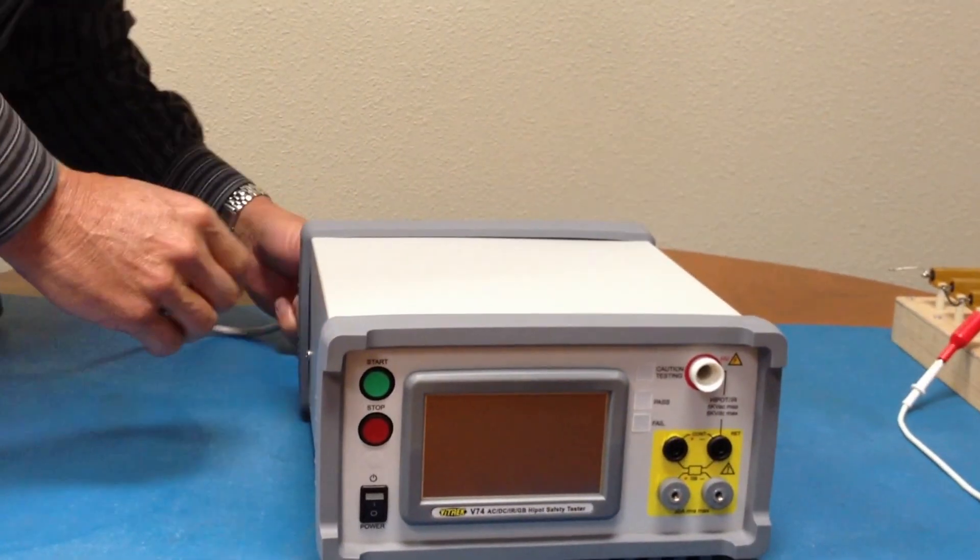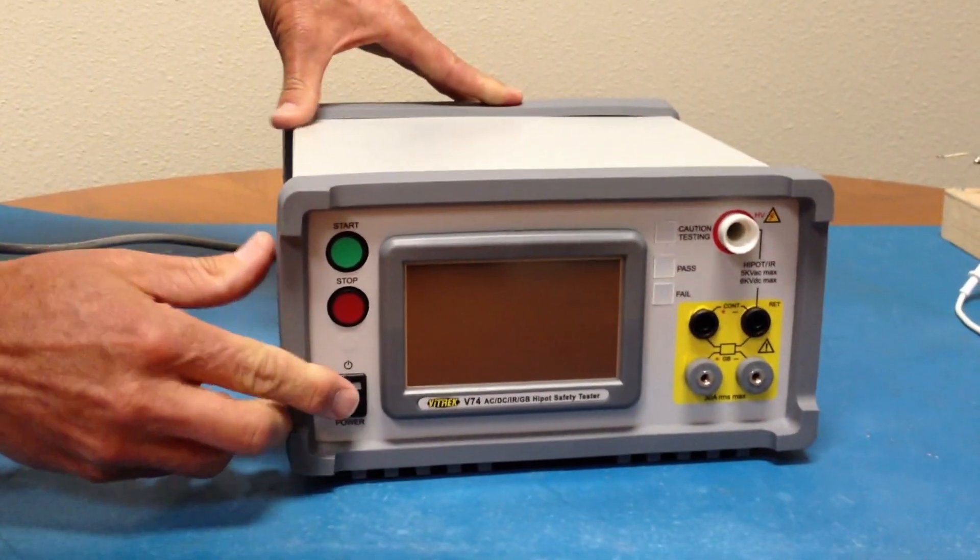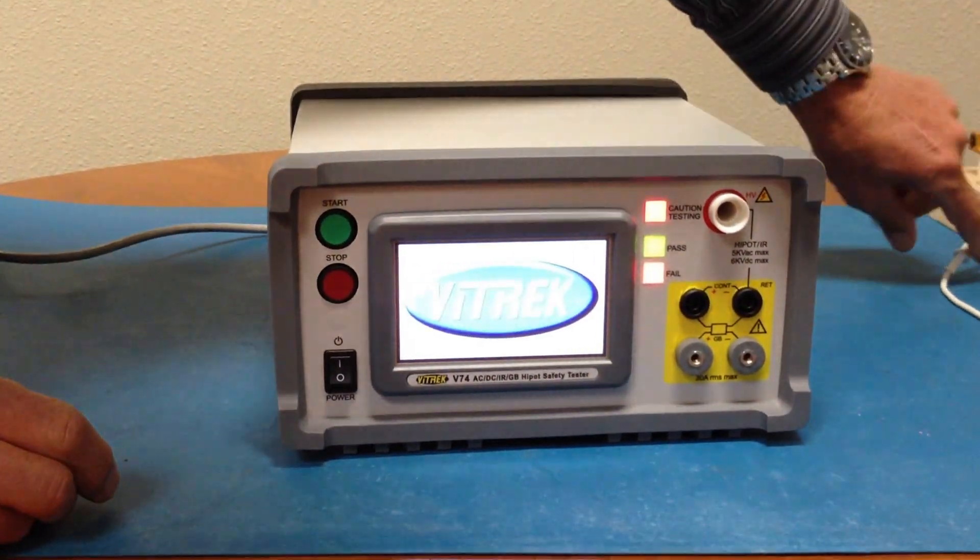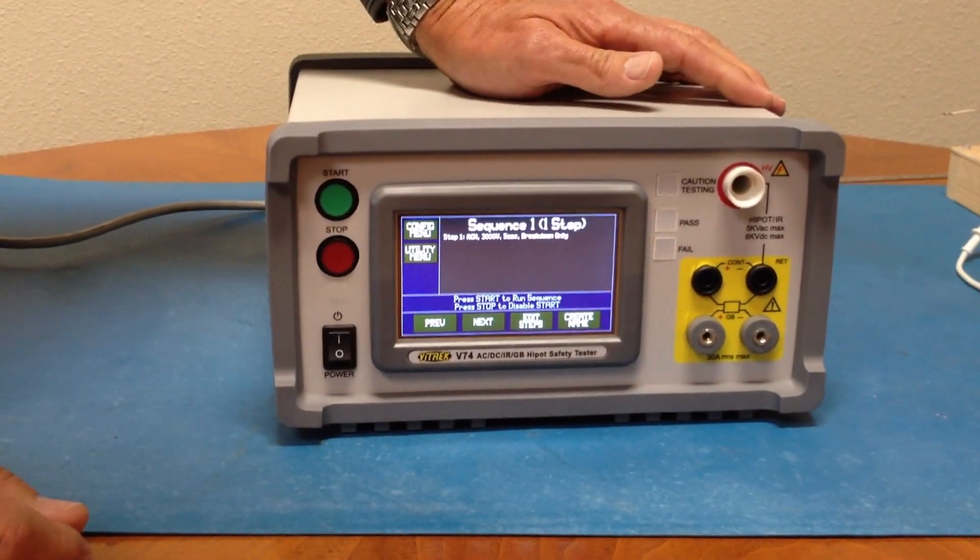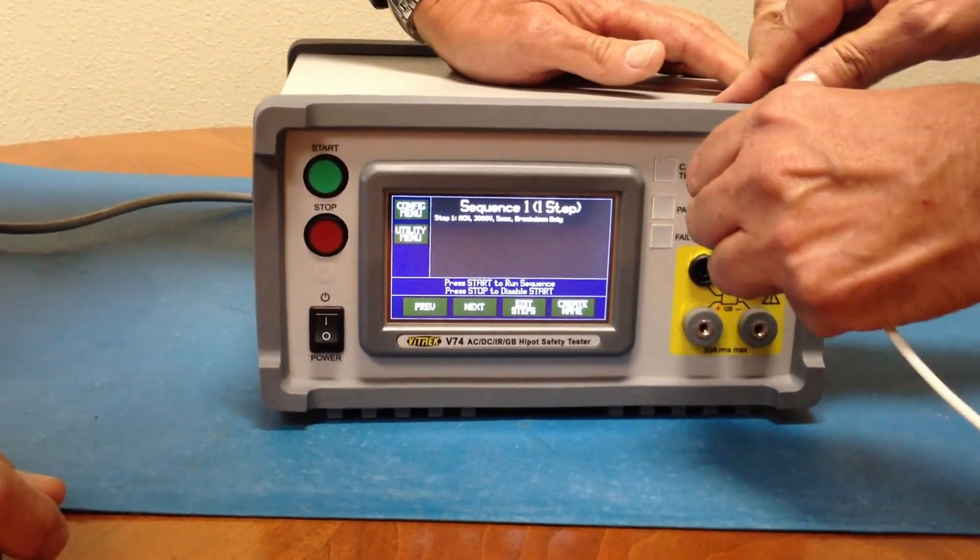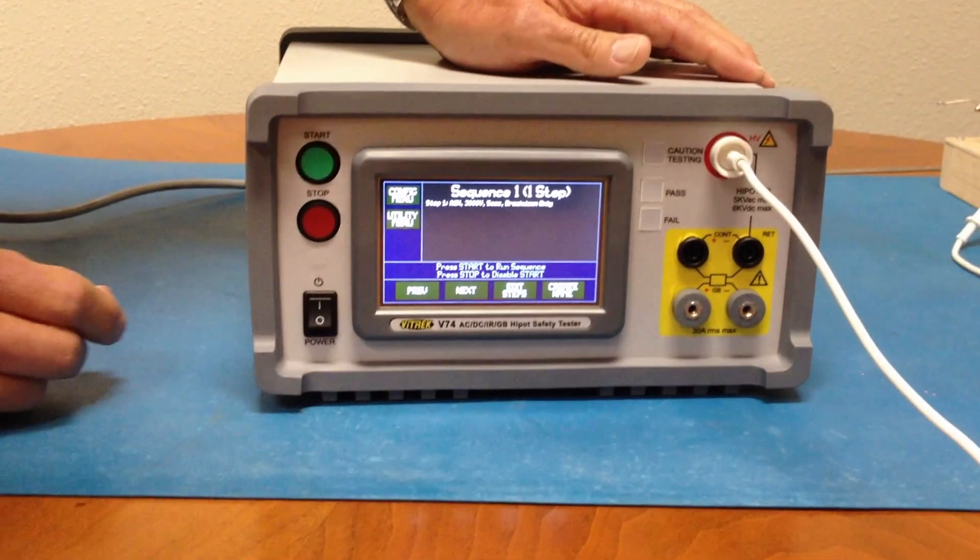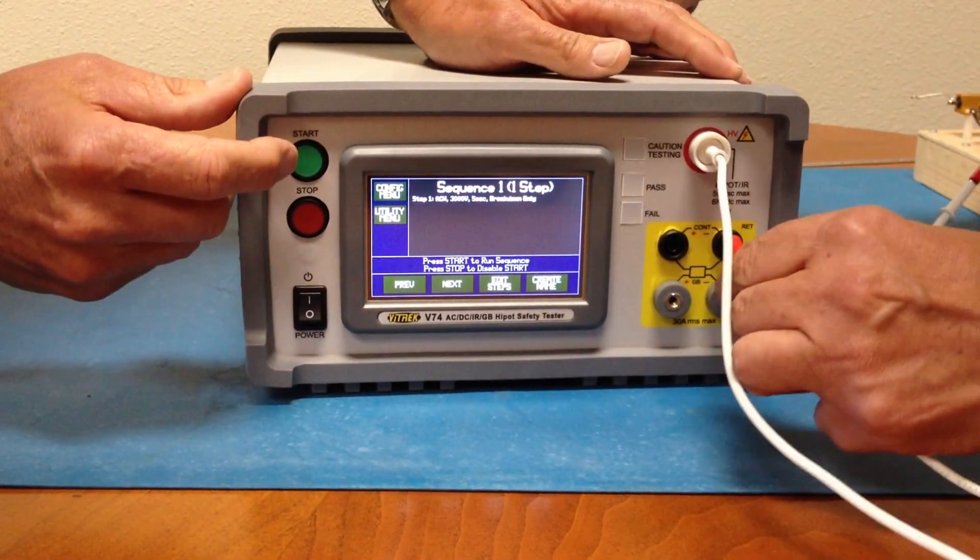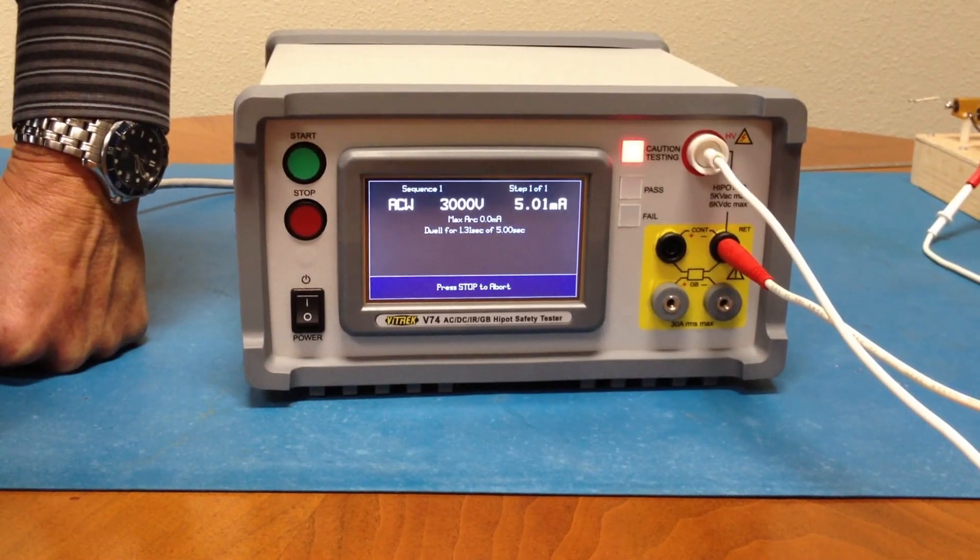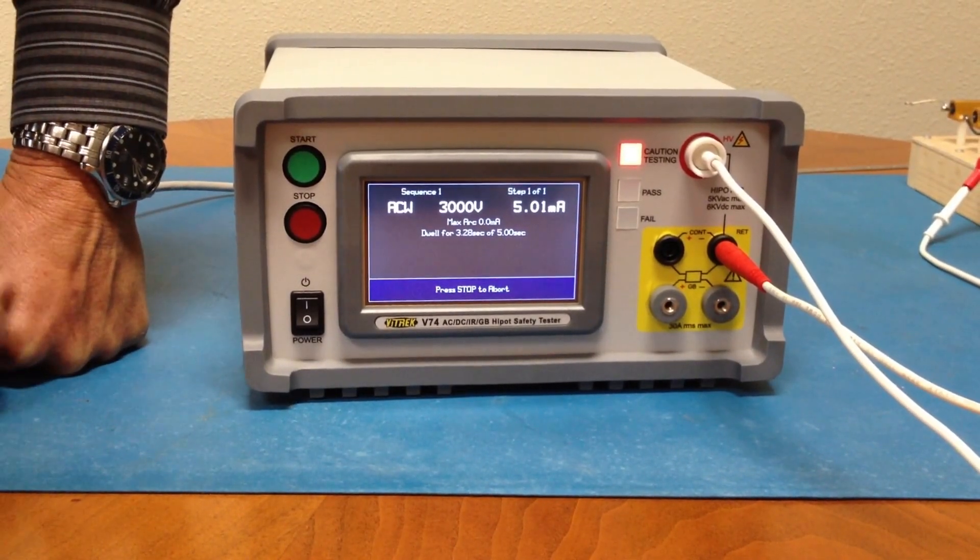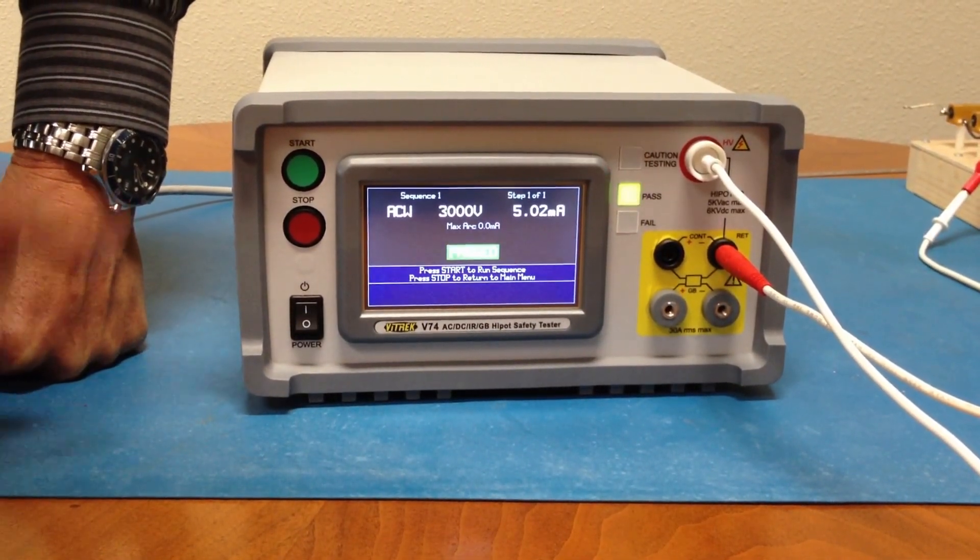All right, let's plug it in. Turn it on. We need the leads. 5 volts. Press this to run the test. There's that 3,000 volts, 5 milliamps, and it passes.